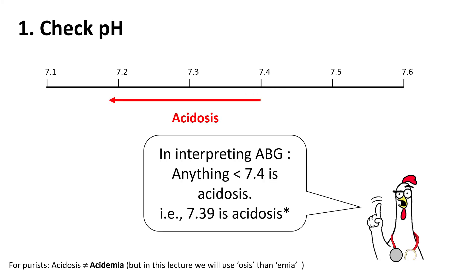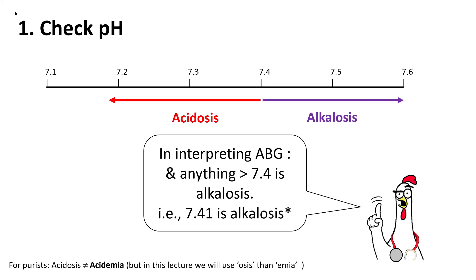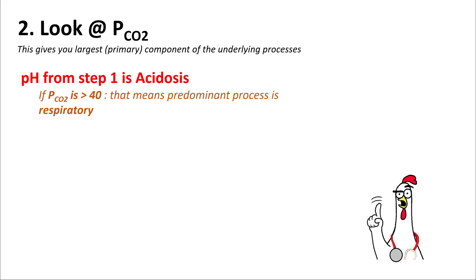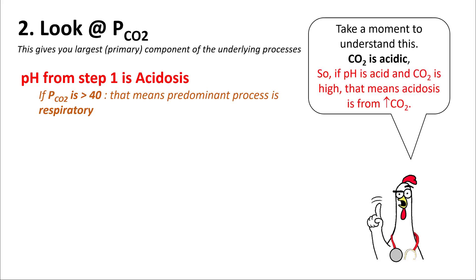Step one: check your pH. Any pH less than 7.4 is acidosis — so a pH of 7.39 is acidosis. Any pH more than 7.4 is alkalosis, so 7.41 is not normal, it is alkalosis. Step two: look at the pCO2. This gives you the primary component of the underlying process. Do not look at the bicarb at this step. If the pH is acidosis and pCO2 is more than 40, the predominant process is respiratory. Carbon dioxide is acidic, so elevated CO2 causing acidosis means respiratory acidosis.